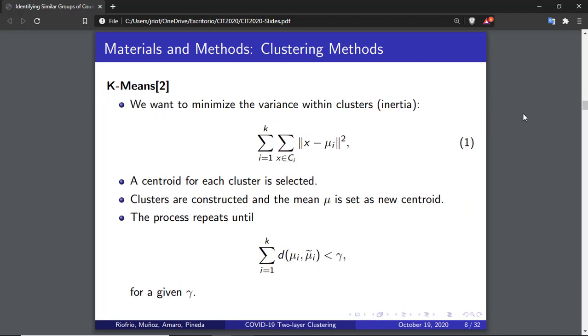K-means is a well-known clustering algorithm. A centroid for each cluster is selected, K in total. In the simplest case, these are observations. Clusters are constructed by passing each observation to its nearest centroid. For each cluster C sub i, the mean mu sub i is computed and assigned as the new centroid. For each cluster, the distance between the new centroid and the old centroid is computed. The process is repeated until the distance between the old and the new centroid is less than a fixed threshold.